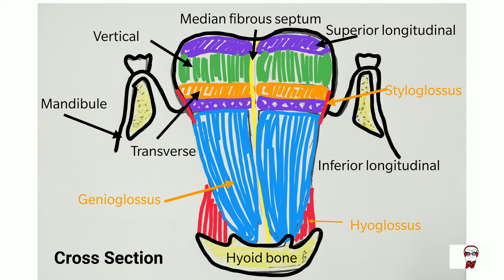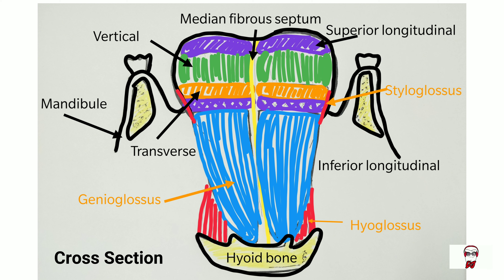Here we have a cross section of the tongue. The superior longitudinal muscle is located below the lingual mucosa — it is the superiormost muscle. Underneath that is the vertical muscle. Below that is the transverse muscle of the tongue, and the inferiormost intrinsic muscle is the inferior longitudinal muscle.